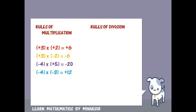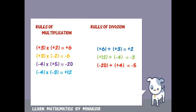Then the rules of division with values. Plus 6 divided by plus 3 gives plus 2. Plus 12 divided by minus 4 gives minus 3. Minus 20 divided by minus 4 gives minus 5. Minus 6 divided by minus 2 gives plus 3.